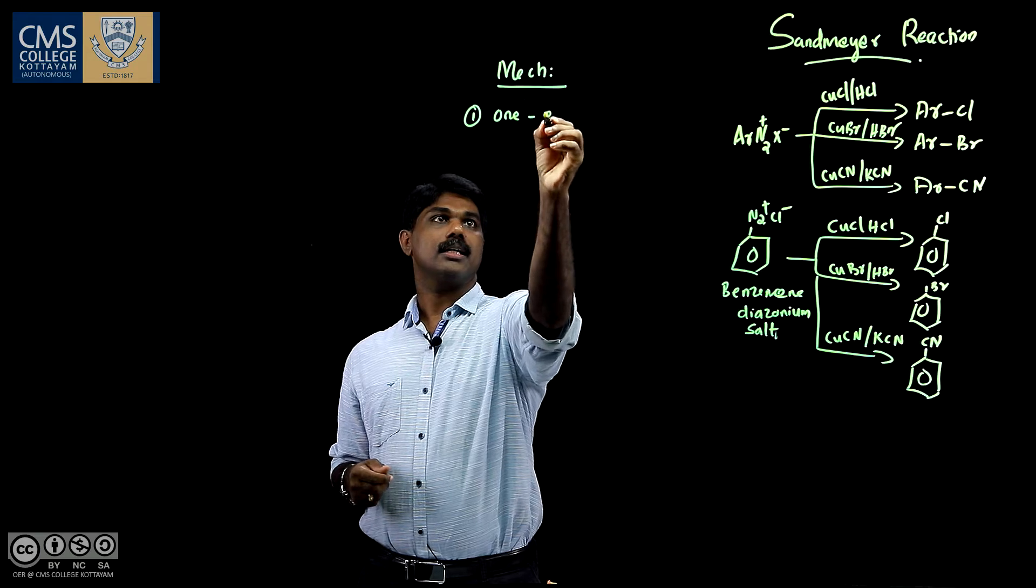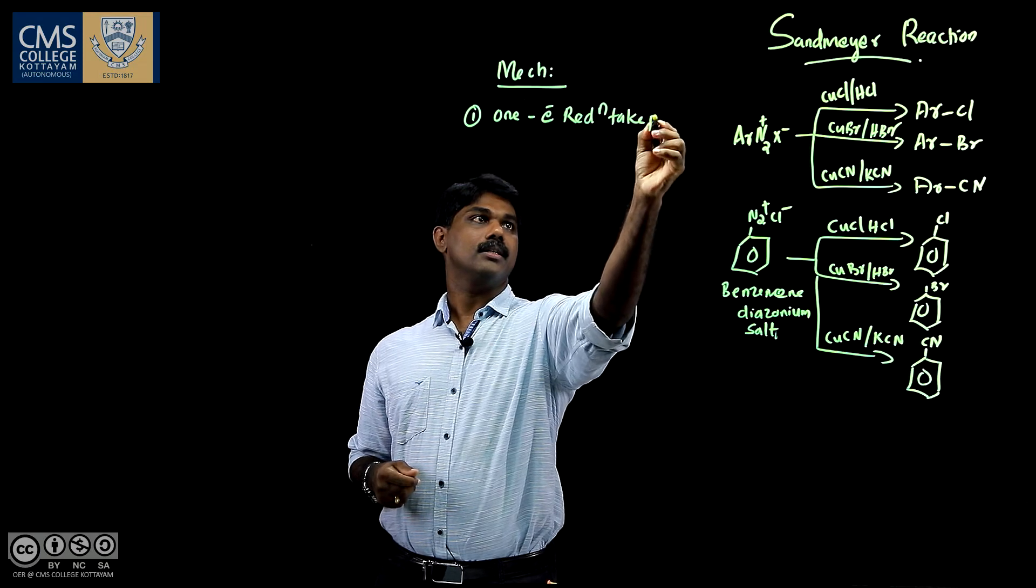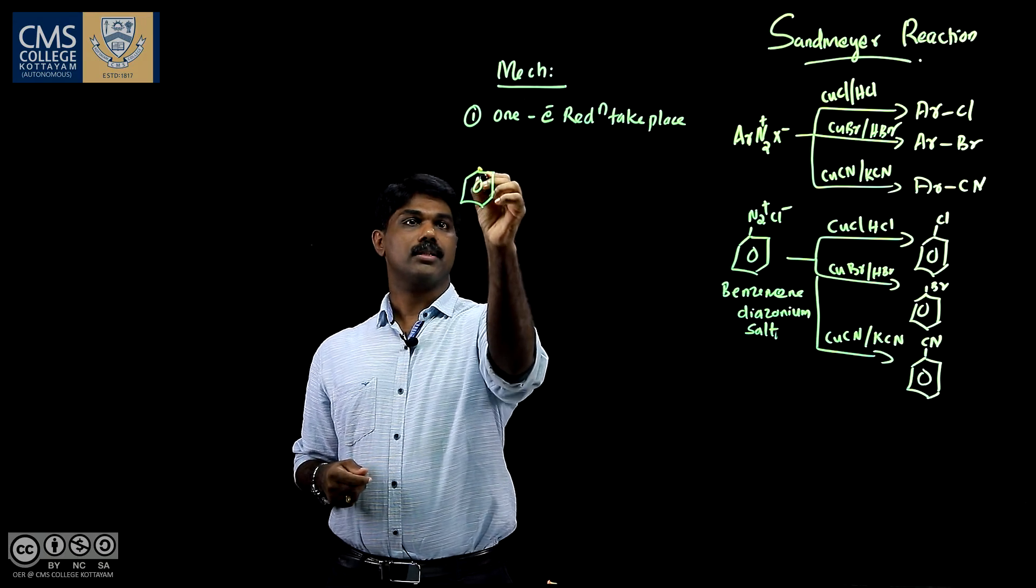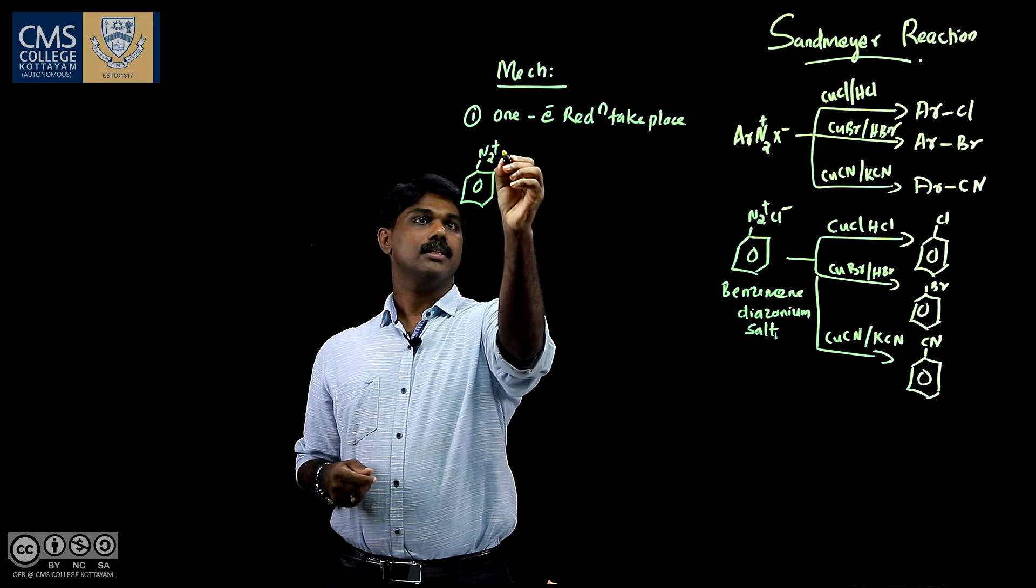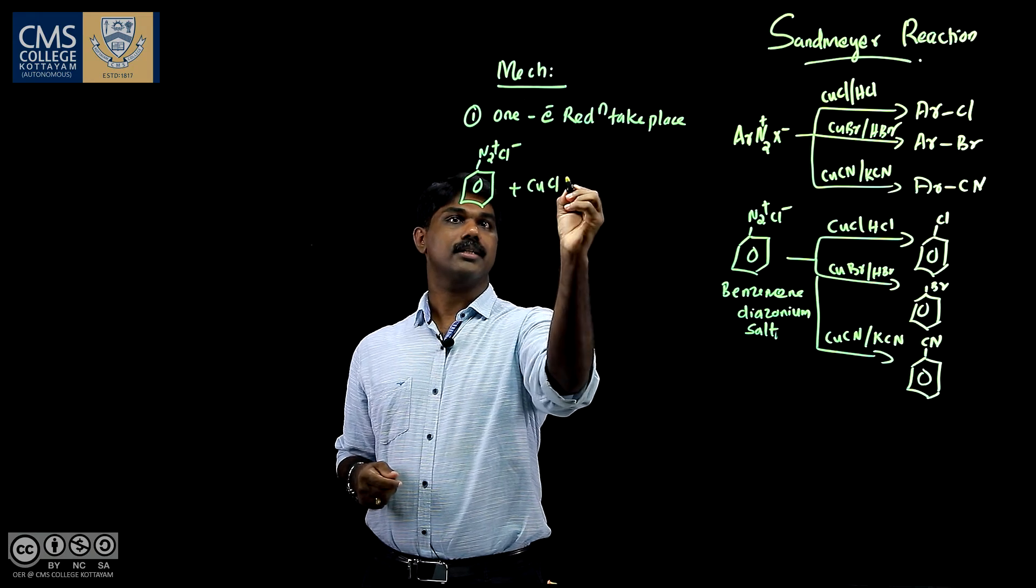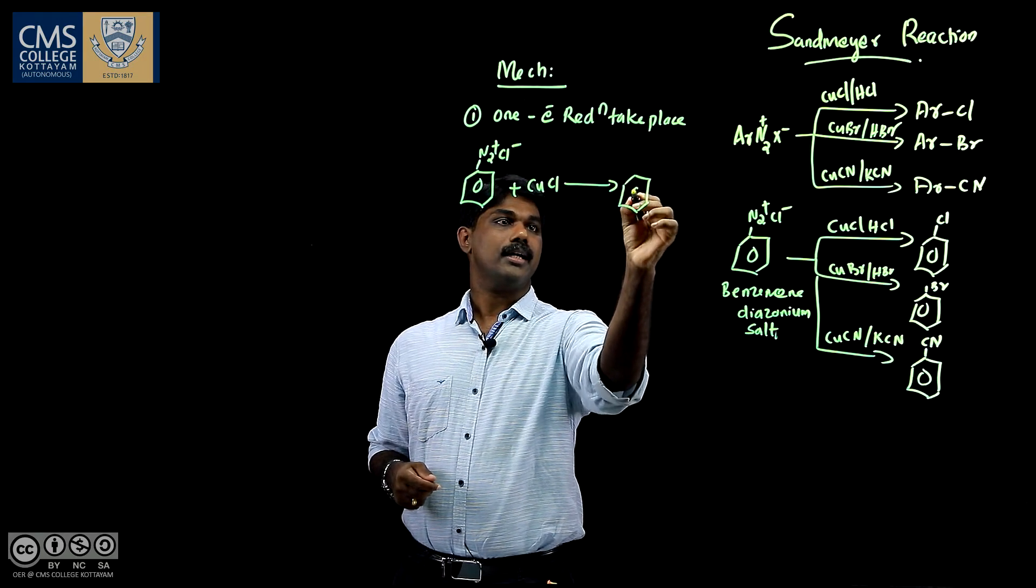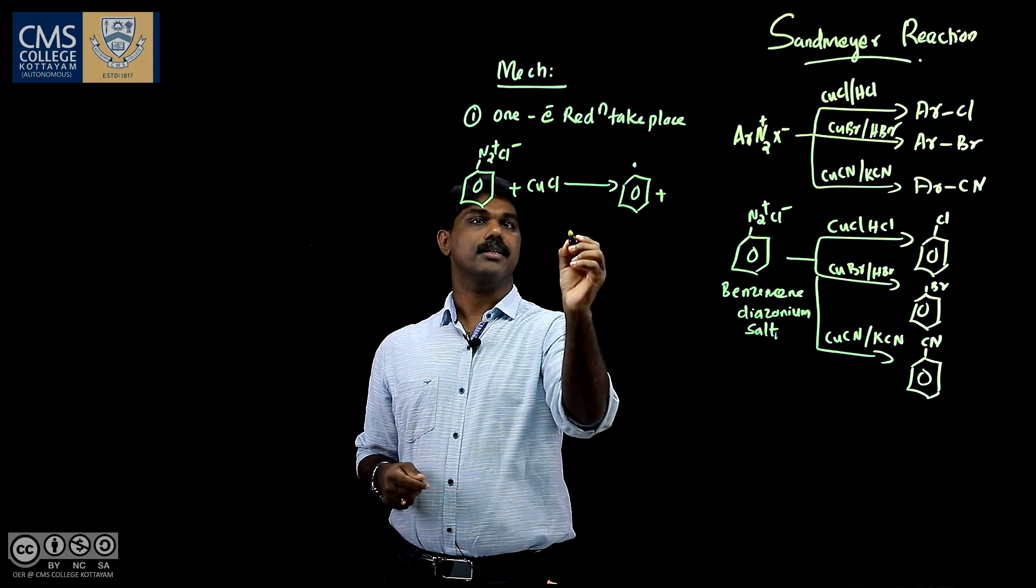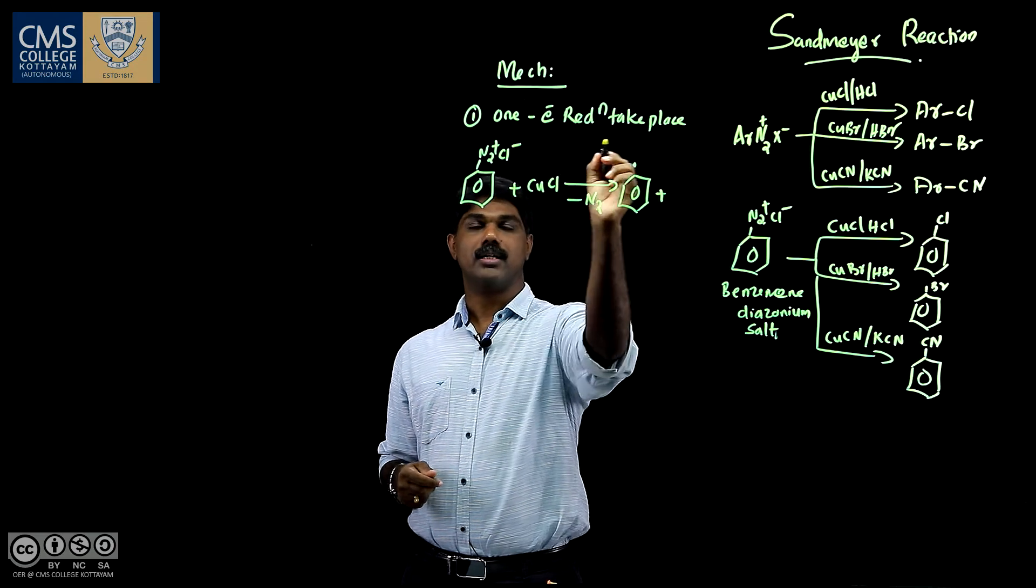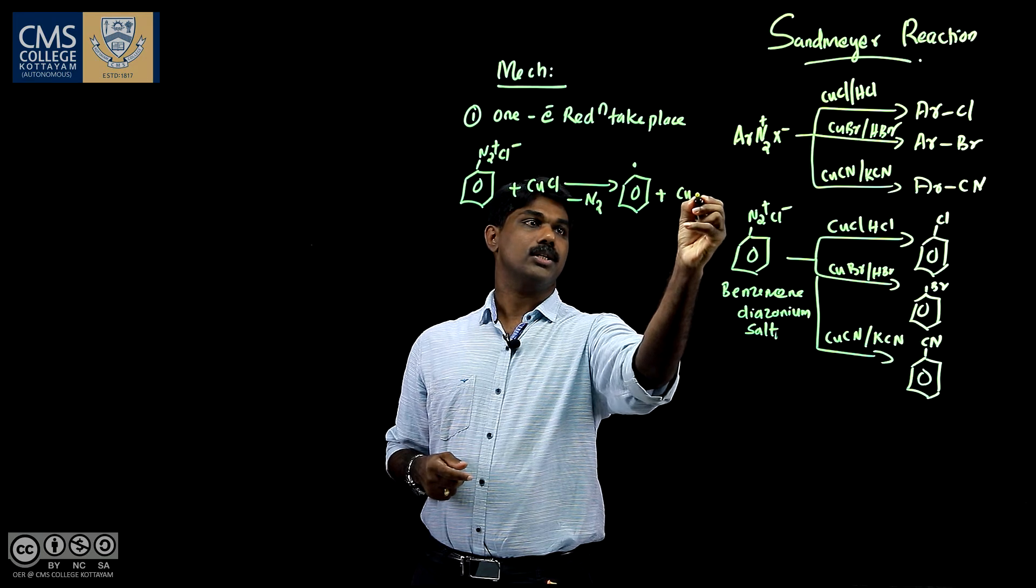So in first step, one electron reduction takes place. I will show you this diazonium salt, that is N2+ Cl-. First interact with the cuprous chloride, CuCl. We get a phenyl radical. And so here nitrogen gas gets eliminated and we get a phenyl radical by one electron reduction process. And you get CuCl2 here.